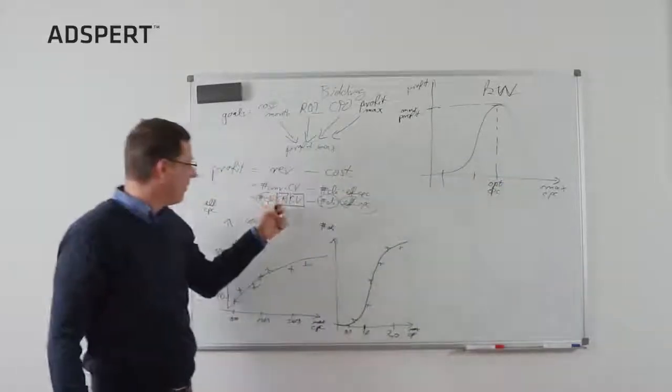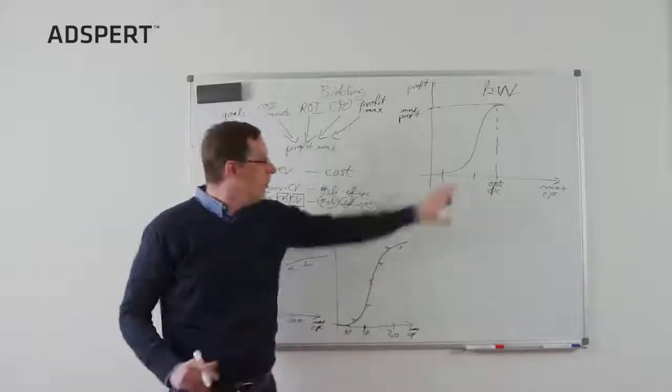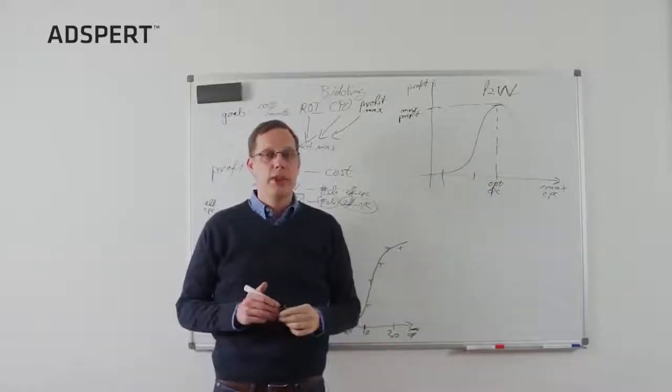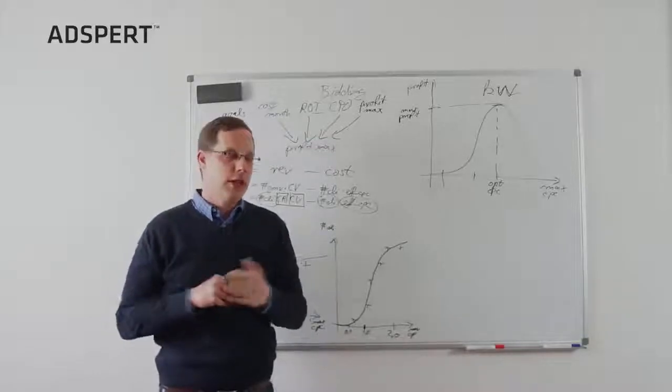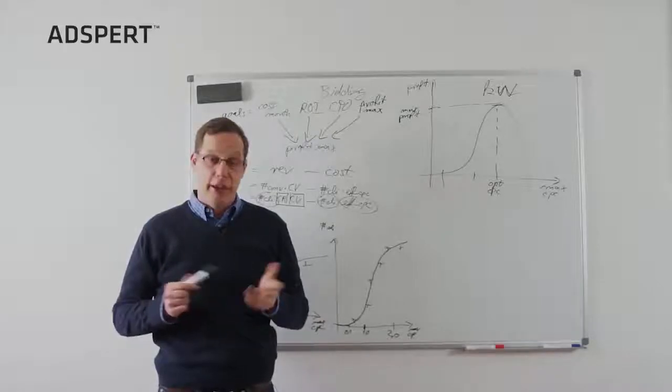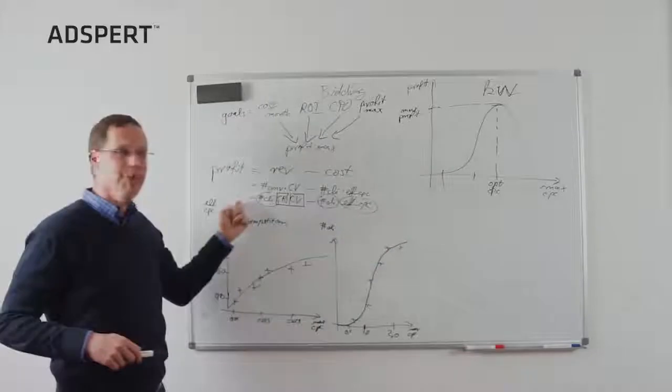Okay. Later on, I'll tell you how to estimate conversion rate and conversion value. But that's it. That's the base bid we simply place. Of course, there are the bid adjustments that modify the bids for different devices, age, gender, topic, geo, or whatever. And this has to be taken into account too. So, profit maximization done. Thanks.